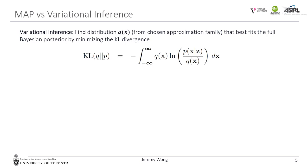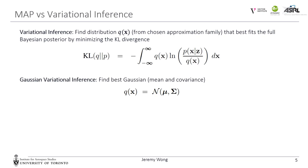In variational inference, we instead choose the distribution q from an approximation family and find the q that best fits the full Bayesian posterior by minimizing the KL divergence between the two. We choose to do Gaussian variational inference — that is, we choose q, the approximation of the posterior, to be Gaussian. Thus, we directly optimize for both the best mean and the covariance. One limitation is that variational inference is not tractable for large problems with large state size, which is why in robotics we usually resort to MAP.